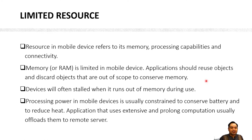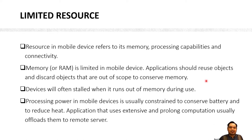Next we look at limited resources. Resources in mobile devices refer to memory, processing capability, and connectivity. Memory inside mobile devices is very precious and limited. If you are developing an application, you should reuse objects and discard objects that are out of scope to conserve memory. This is especially important in dynamic type programming languages such as Java or C++, where you should ensure objects are released to the garbage collector whenever they are out of scope.